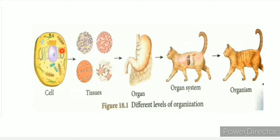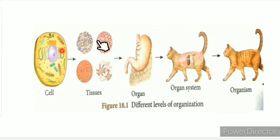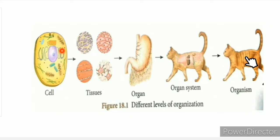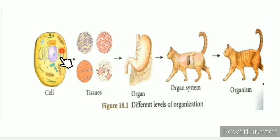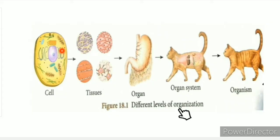We already studied this in unit 18 and the 8th standard. This shows the cell, and cells group together to form tissues and organs. The organ system is one whole system, and the organism is made up of its own organization. Words and levels of organization are different from one another.